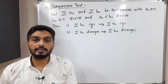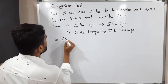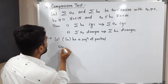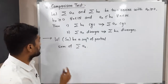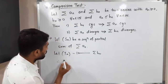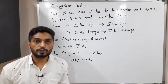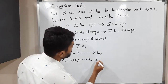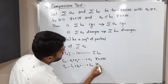Since when we discuss any result about series we mostly use the sequence of partial sums. Let Sₙ be the sequence of partial sums of series summation aₙ, and let Tₙ be the sequence of partial sums of series summation bₙ. So Sₙ = a₁ + a₂ + ... + aₙ for all n in the natural numbers, and similarly Tₙ = b₁ + b₂ + ... + bₙ for all n in the natural numbers.